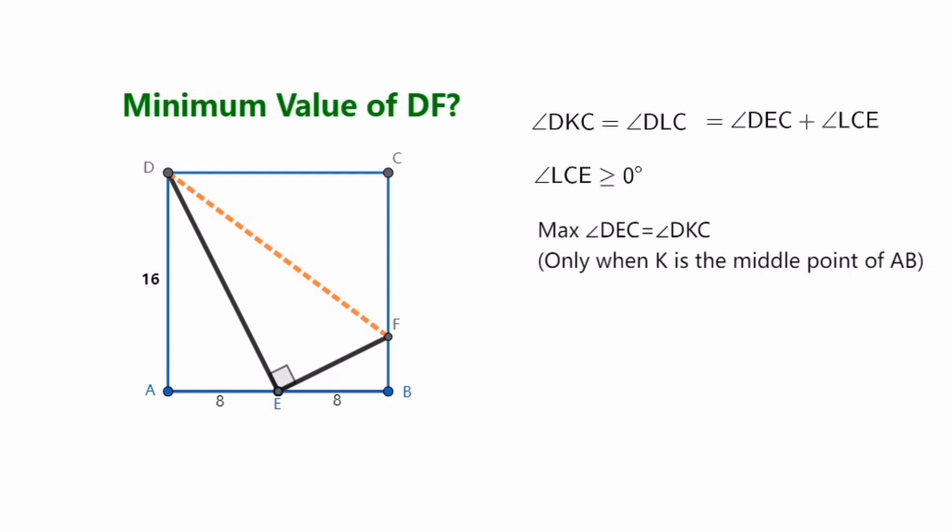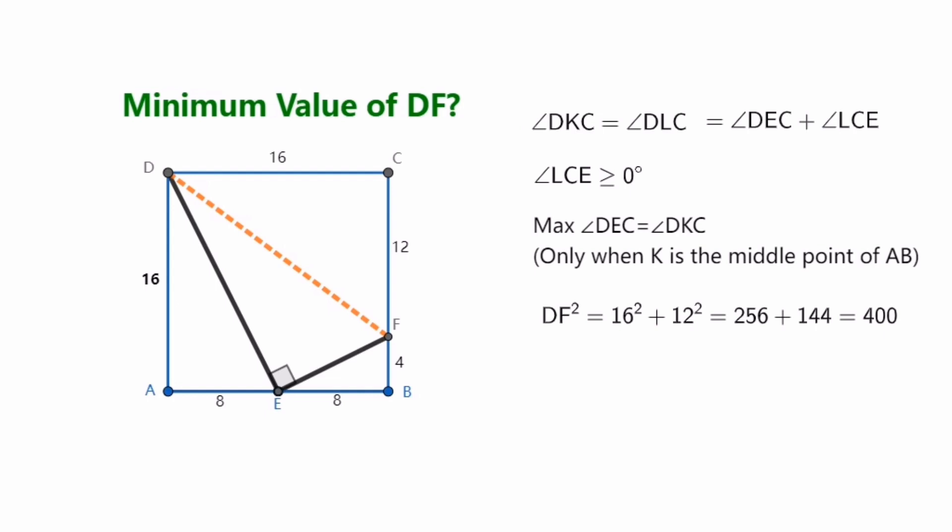We already know in the first way that triangle FBE is similar to triangle EAD. By similar relationships, we can quickly get the value of the side length BF is equal to 4. So we know that the two sides of the right triangle DFC are 16 and 12 respectively. Using Pythagorean theorem we get DF squared is equal to 16 squared plus 12 squared, that's equal to 400. So we get the final answer. The minimum of DF is equal to 20.